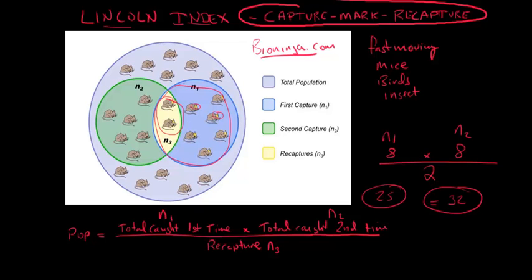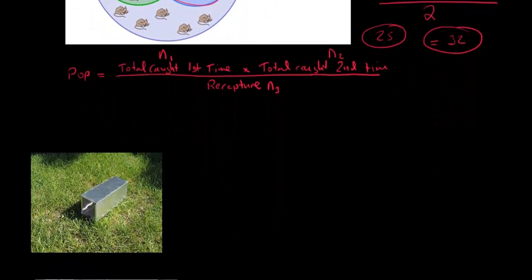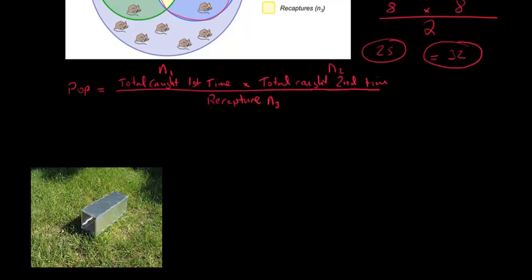All right. So let's look at how you might do this. So one of the things we use is a Sherman trap. That's what this is called here. And this is a common thing to use. And you can see that the mouse goes in this end. There's food on a little plate in this end. And they step on it and the door closes. And they're trapped inside. And they're alive.